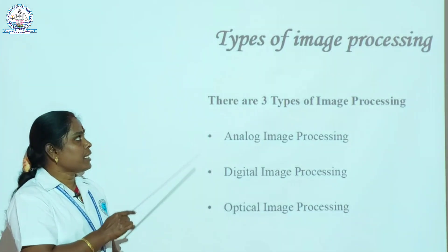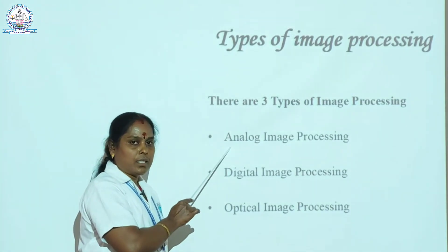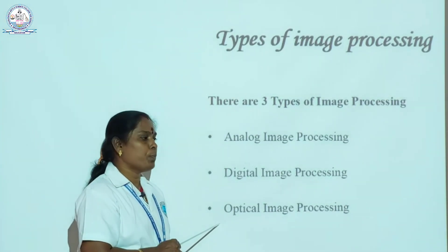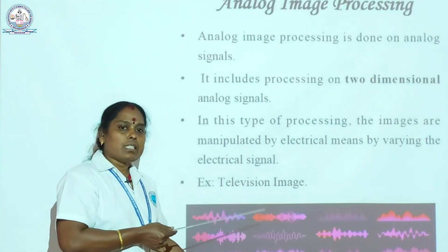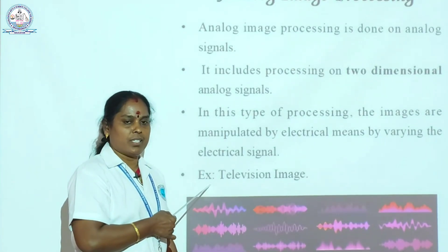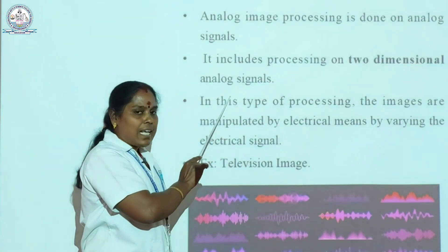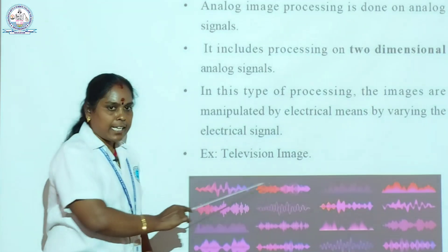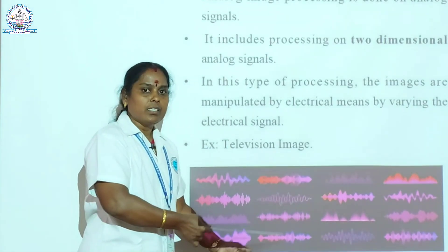There are three different types of image processing: analog image processing, digital image processing, and optical image processing. Analog image processing is used only in wavelength format, mostly used in our life — for example, telephone images. Analog images are processed on analog signals only, and analog signals are formed in the format of electrical signals. This diagram shows various analog signals being converted into digital signals.